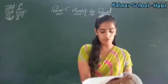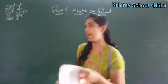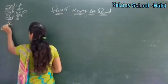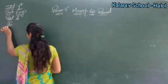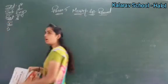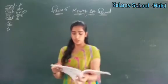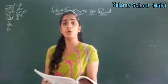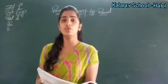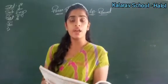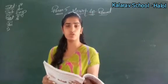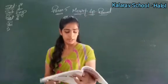Dekho, first question kya hai? Write the correct answers: A, B, C, or D. Aap logo ko four options diye hue hain. Aapko choose karna hai aur correct answer jo hai usko likhna hai.